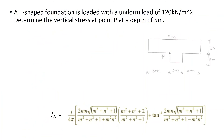Next is the rectangular area problem. We have a T-shaped foundation with a uniform load of 120 kN/m². We need to find the vertical stress at point P at a depth of 5 meters. To solve this, we divide the T-shaped area into sub-rectangles A1, A2, and A3, each sharing the corner point P.